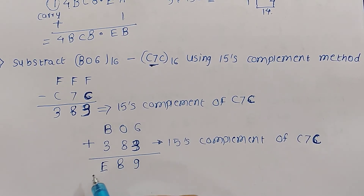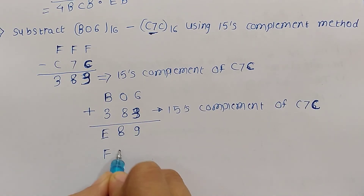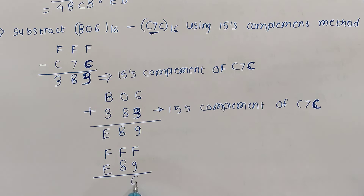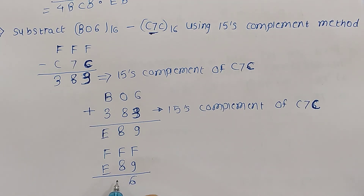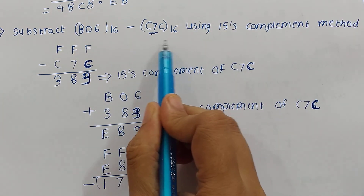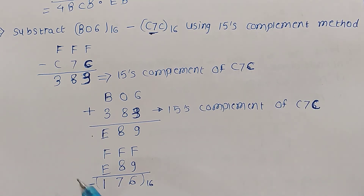No carry being generated indicates that the answer is negative and it is in 15's complement form. To get the actual answer we subtract the result from FFF. F minus 9 is 6, F minus 8 is 7, and F minus E: F is 15 and E is 14, so 15 minus 14 is 1. The answer is negative, so minus 176 is the answer for this example.